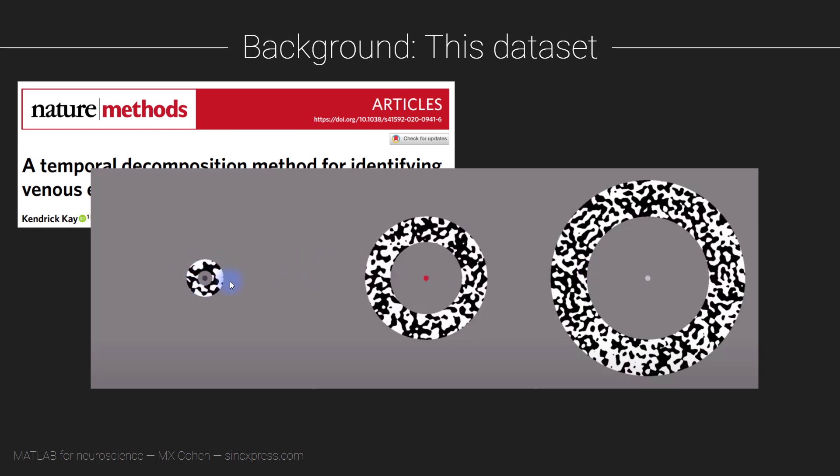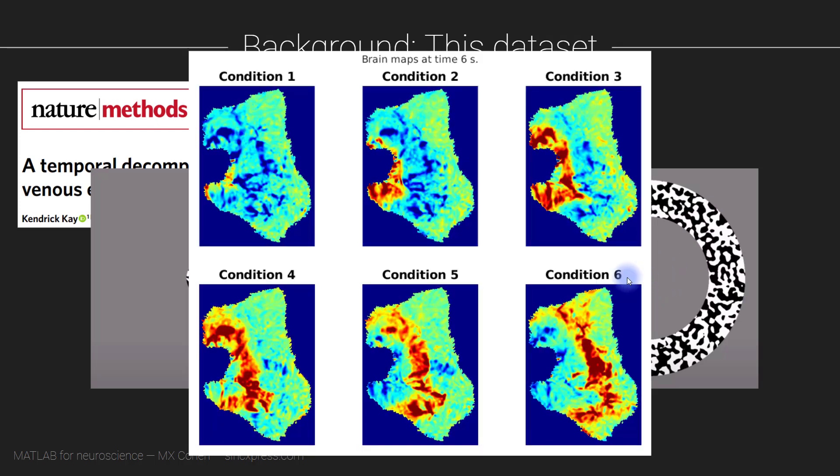In total there were six conditions that varied from the least eccentric to the most eccentric, in other words the closest to the origin or to the fovea and the furthest away from the fovea. Here you see a little bit of data that we are going to produce in a later video in this module. So these are the flat maps from the six different eccentricity conditions. The concavity here, this concavity corresponds to primary visual cortex, and you can see that the fMRI signal in red moves further away from the calcarine sulcus with increasing condition number, which means increasing eccentricity.